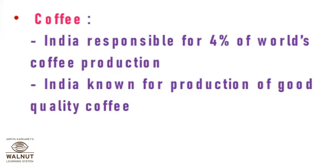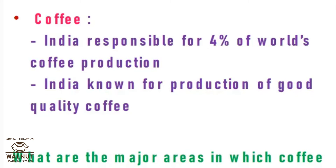The next crop is coffee. India is responsible for 4% of the world's coffee production. India ranks well in both tea and coffee exports in large quantities. India is known for the production of good quality coffee. What are the major areas in which coffee is grown? List the states.